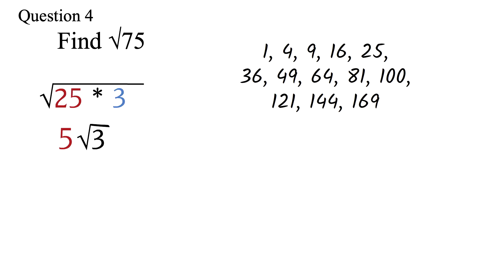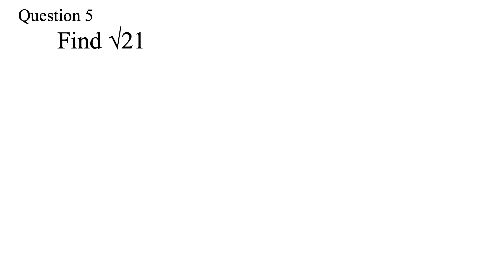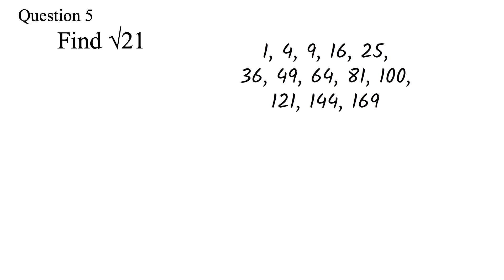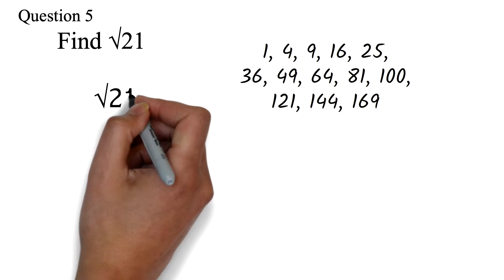Let's take our next question. Question 5: find the square root of 21. As usual, the first thing is to check if 21 is a perfect square. Looking at our perfect squares, we can see that 21 is not a perfect square, so we cannot find the square root. Next, check if 21 can be written as a perfect square times another number. 21 cannot be written as a perfect square times another number. Once you cannot use either of the two steps, it means you cannot further simplify. So the answer will be √21.